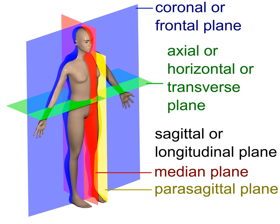The coronal plane is an example of a longitudinal plane, because it is perpendicular to the transverse plane. For a human, the mid-coronal plane would transect a standing body into two halves, front and back, or anterior and posterior, in an imaginary line that cuts through both shoulders.